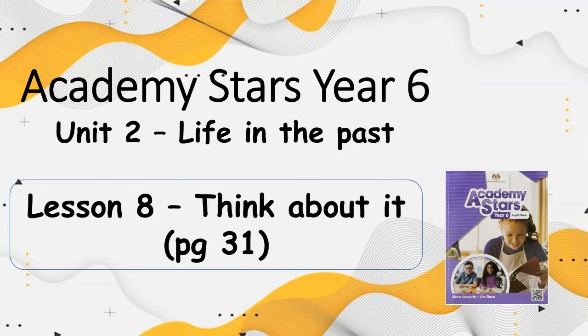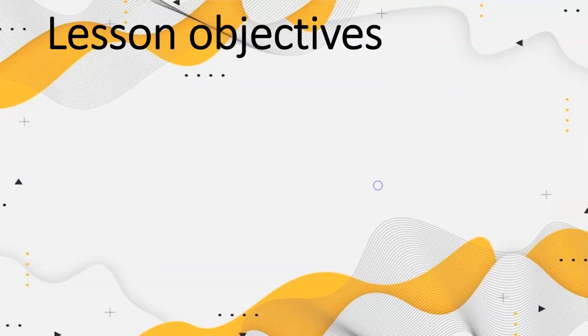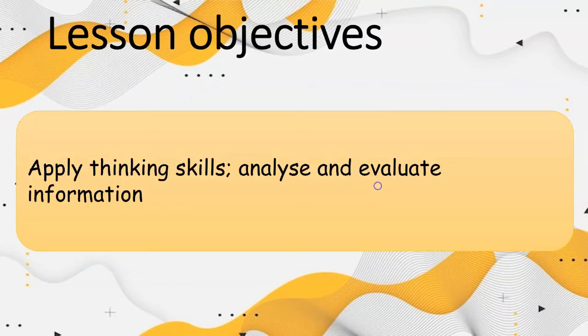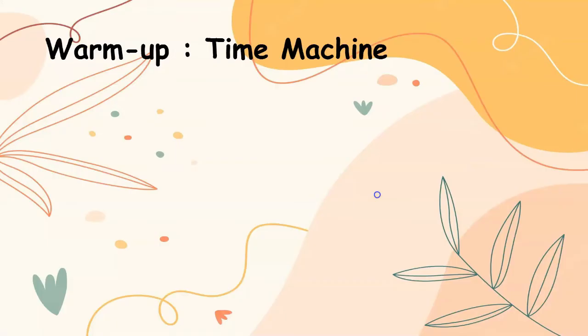Academy starts Year 6, Unit 2, Life in the Past. Lesson 8, Think About It, page 31. Lesson objective: apply thinking skills, analyze and evaluate information.